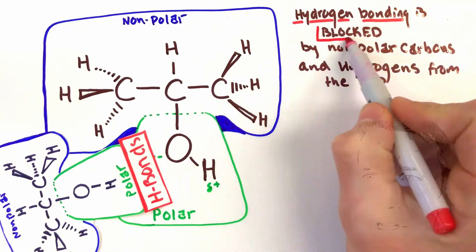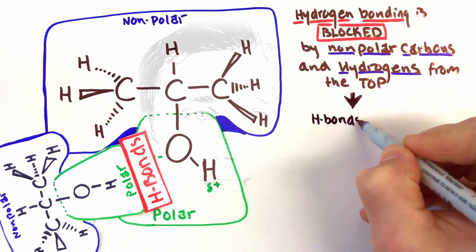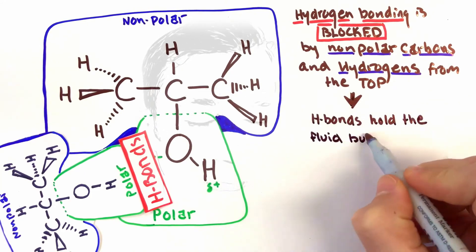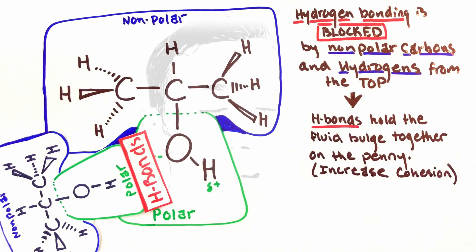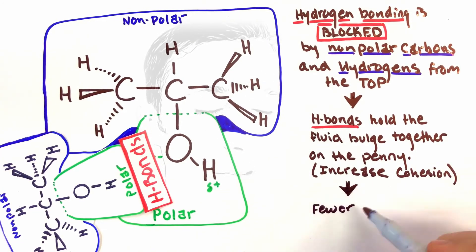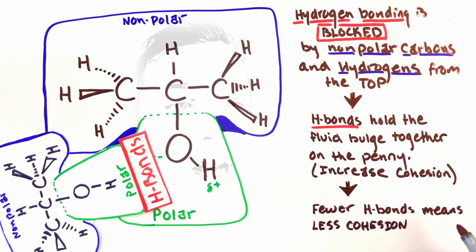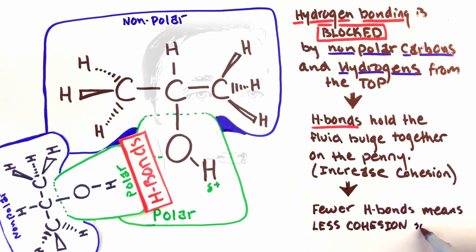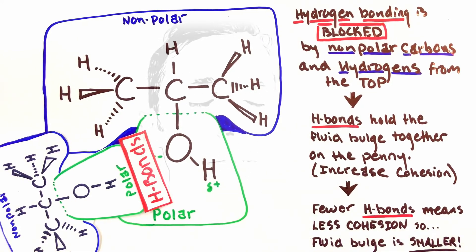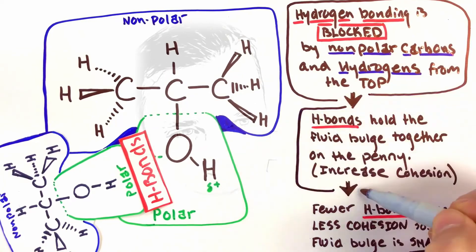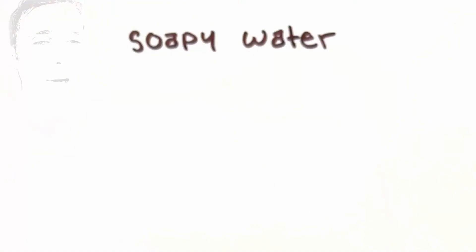So fewer hydrogen bonds means less cohesion; more hydrogen bonds means more cohesion, more stickiness — internal stickiness. Hydrogen bonds are holding that big fluid bulge all together, so if we can't form hydrogen bonds, the fluid bulge is going to be smaller. Fewer hydrogen bonds in alcohol means the fluid bulge is smaller — and we saw it had about 0.53 milliliters, which was less than water's roughly 0.8.